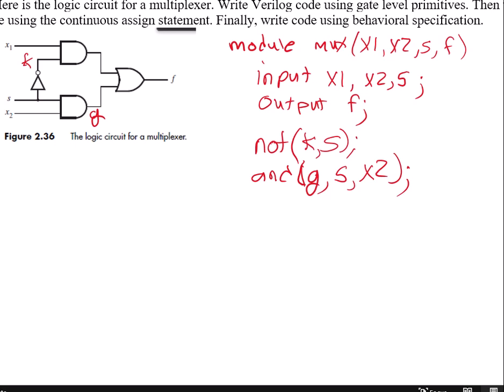Then I will do this top and gate, so and. And I'll call that output h. So h, comma, x1, comma, k. So I'm using that intermediate that I have there, k, semicolon.